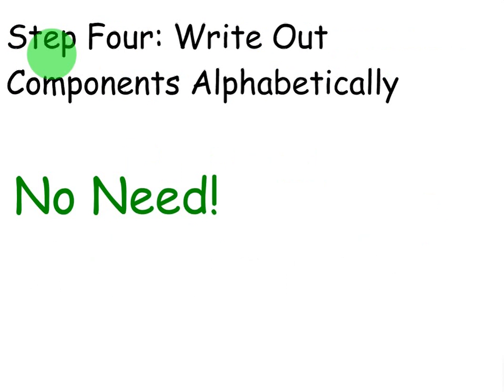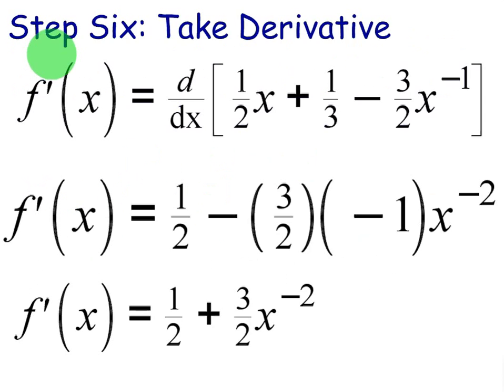Now we'll just use the power rule, skipping over some of these steps that aren't needed. The derivative of one half x is one half. The derivative of one third is zero. The derivative of this, move the negative out front and then subtract 1 from the exponent. So you get positive three halves because it's negative negative x to the negative 2.